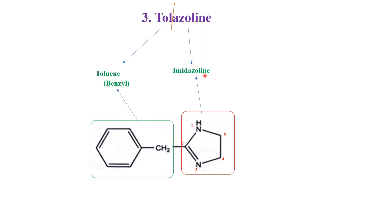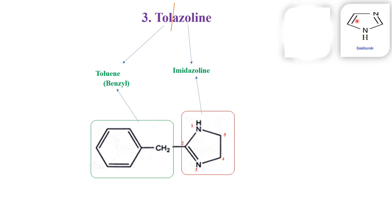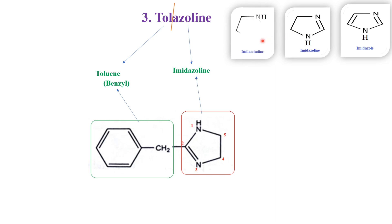We have already known about imidazole. Imidazole is a heterocyclic ring with two nitrogens at positions one and three, and it should have two double bonds inside. If one bond is not there, that is called imidazolin. Without any double bonds, it is called imidazolidine. But here, it is having only one double bond, so that is why it is an imidazolin.